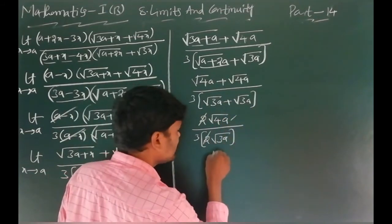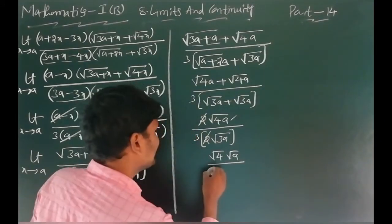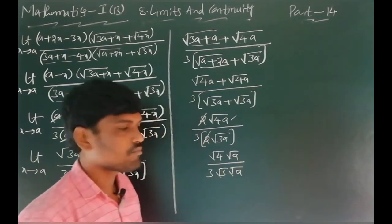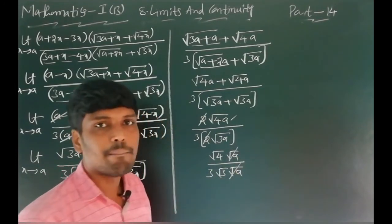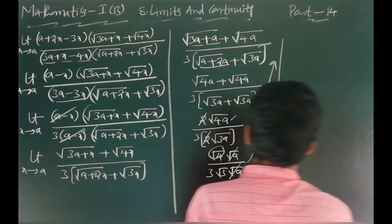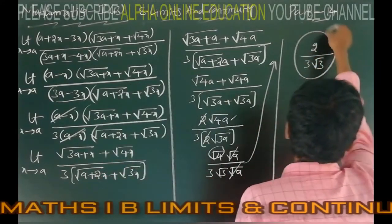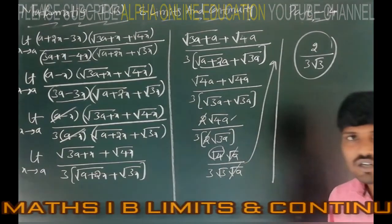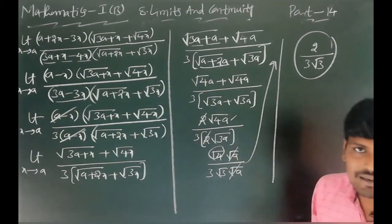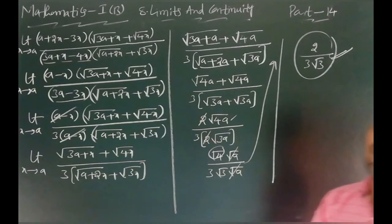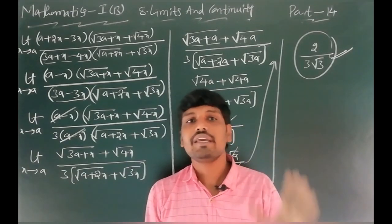Now √(4a) = √4 · √a = 2√a, and denominator is 3 · √3 · √a. The √a terms cancel, leaving 2 / (3√3). The final answer is 2/(3√3). This is a very important 4-mark question in the IPE examination.